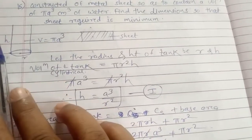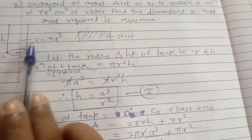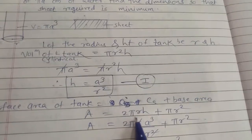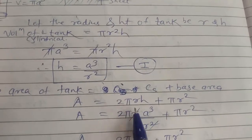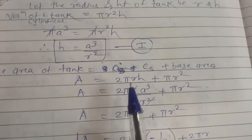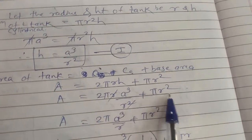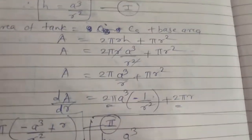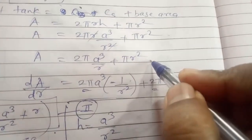The surface area of the open tank consists of the curved surface area (2πrh) plus the base area (πr²). Substituting h = a³/r²: total surface area A = 2πr(a³/r²) + πr² = 2πa³/r + πr². This is our star equation. Taking the first order derivative: dA/dr = −2πa³/r² + 2πr. Factoring out 2π: dA/dr = 2π(−a³/r² + r).